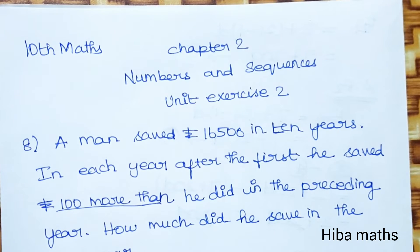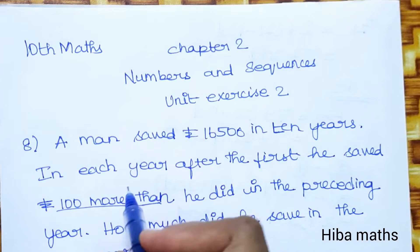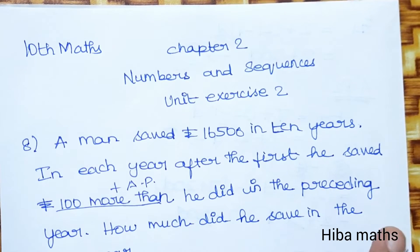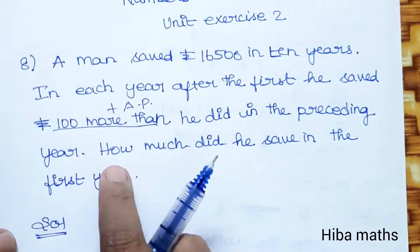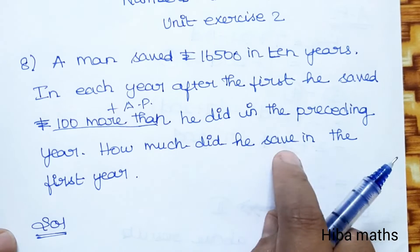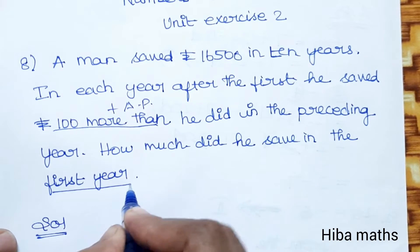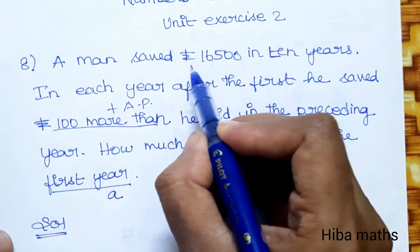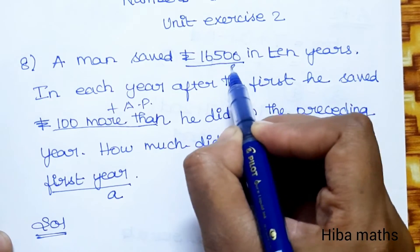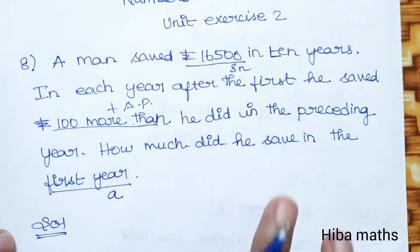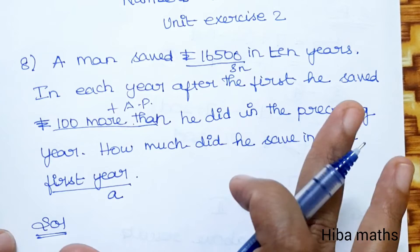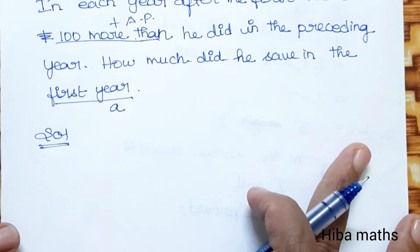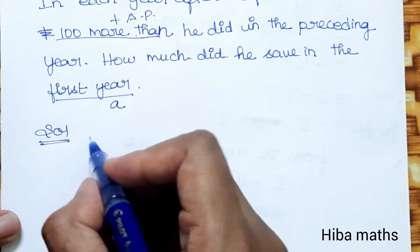Note that 'more than' means it is not lesser. The question asks: how much did he save in the first year? The first year amount is the A term. This is S of N for an AP — this is the hint you can use to solve the question.